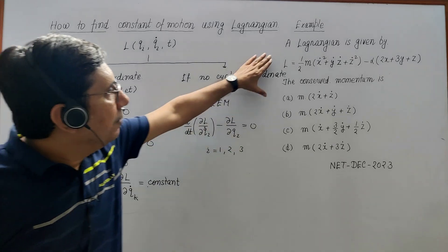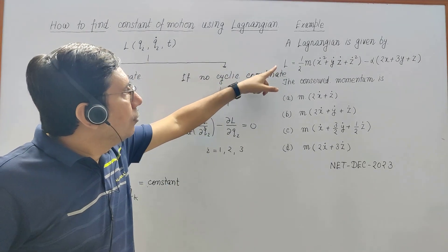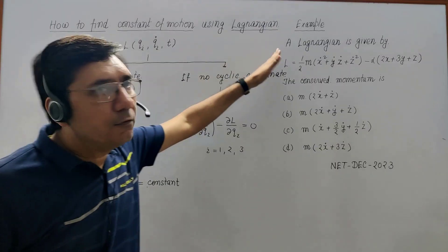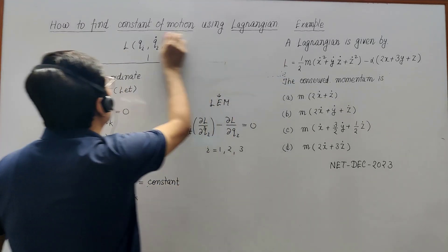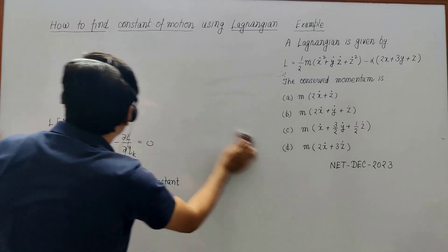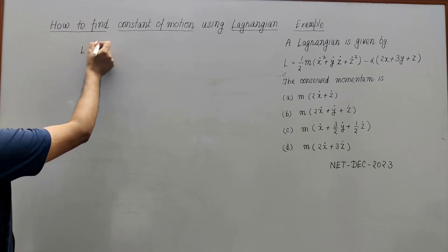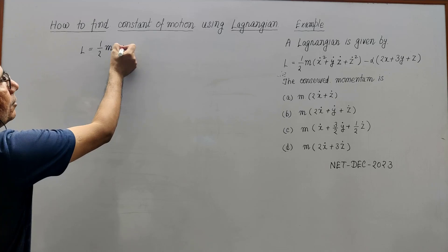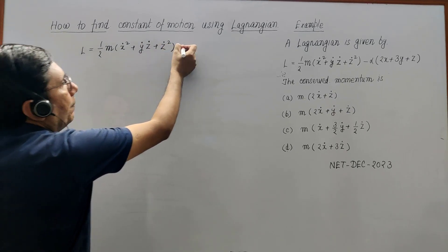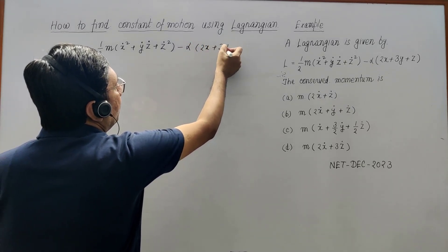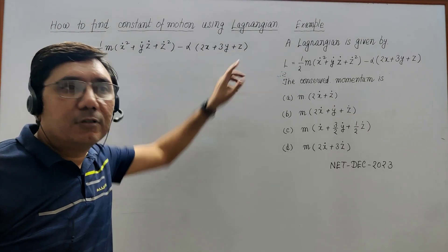I can give you a very good example — this question was asked recently in the NET examination, NET December 2015. Here, a Lagrangian is given: L = ½m(ẋ² + ẏż + ż²) − α(2x + 3y + z). First, you search for cyclic coordinates, but x is here, y is here, z is here — so there are no cyclic coordinates.